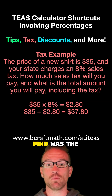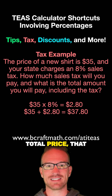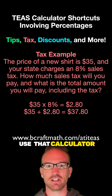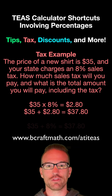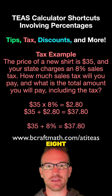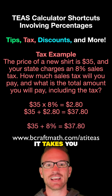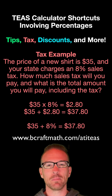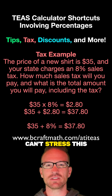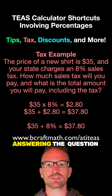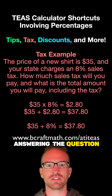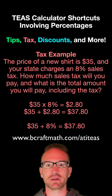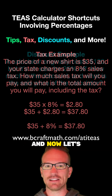Now, if all we had to find was the total price — that second question in this problem — let's use that calculator shortcut again. $35 plus 8% takes you straight to that answer of $37.80. But again, I can't stress this enough: make sure you are answering the question that's being asked. In this case we had two different questions, but I do want to emphasize that.